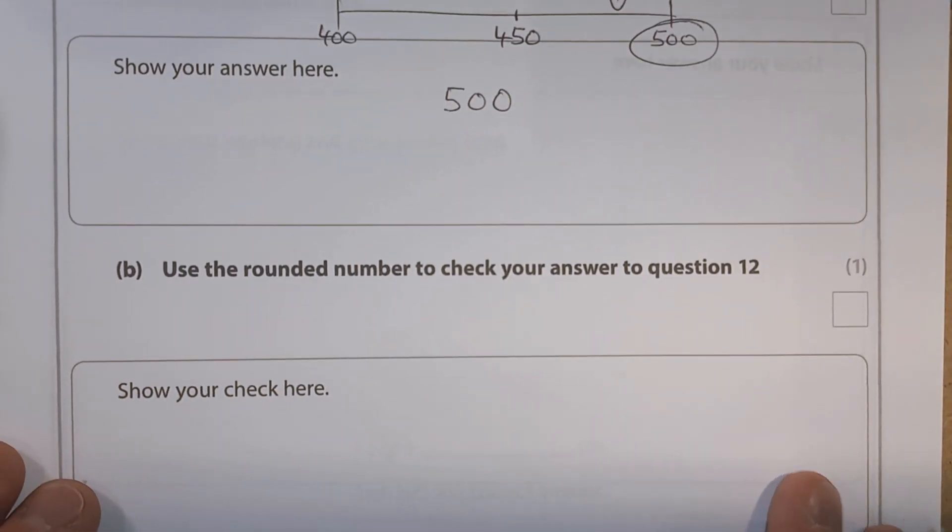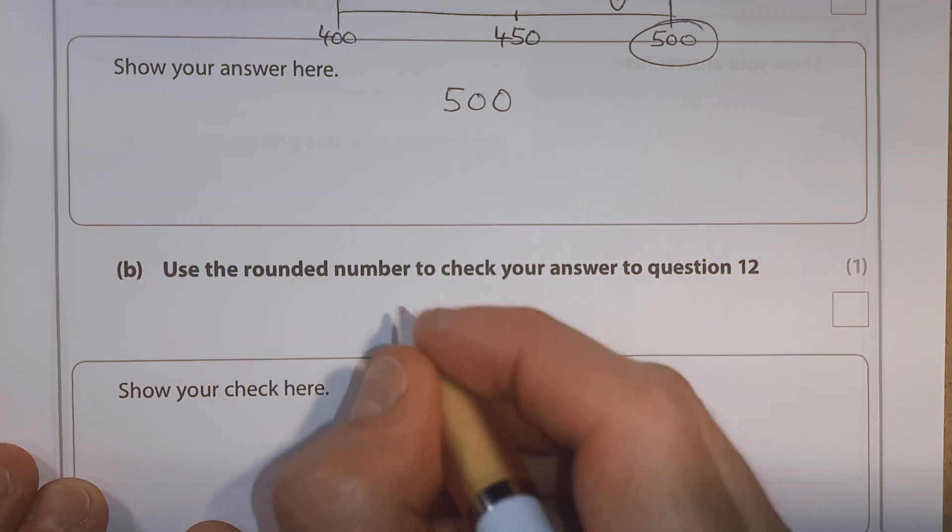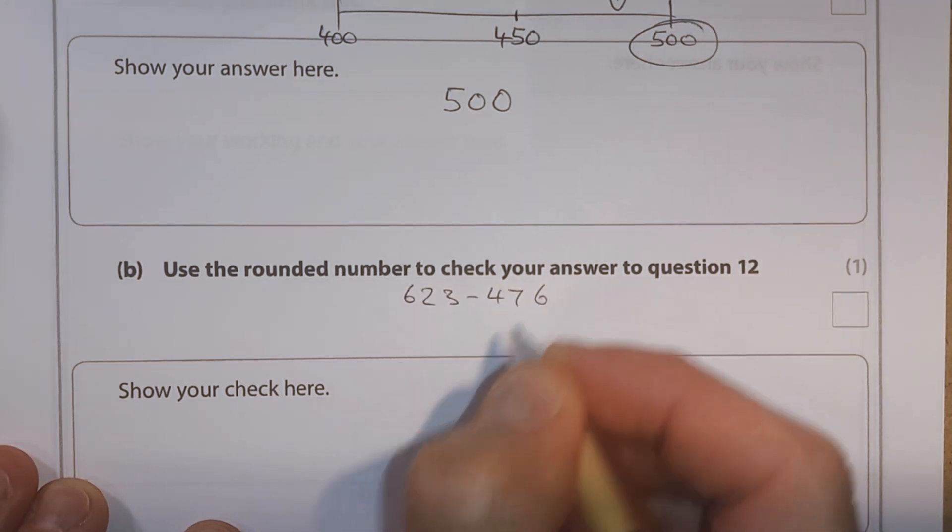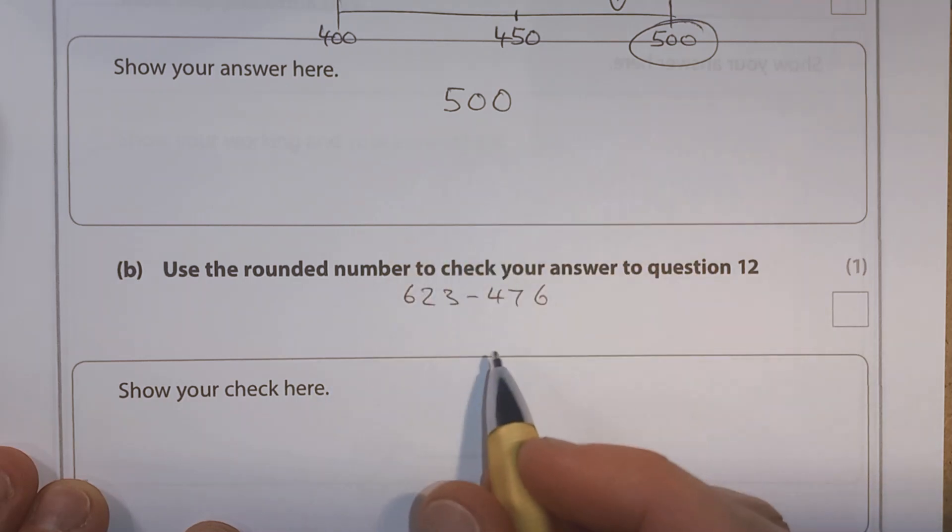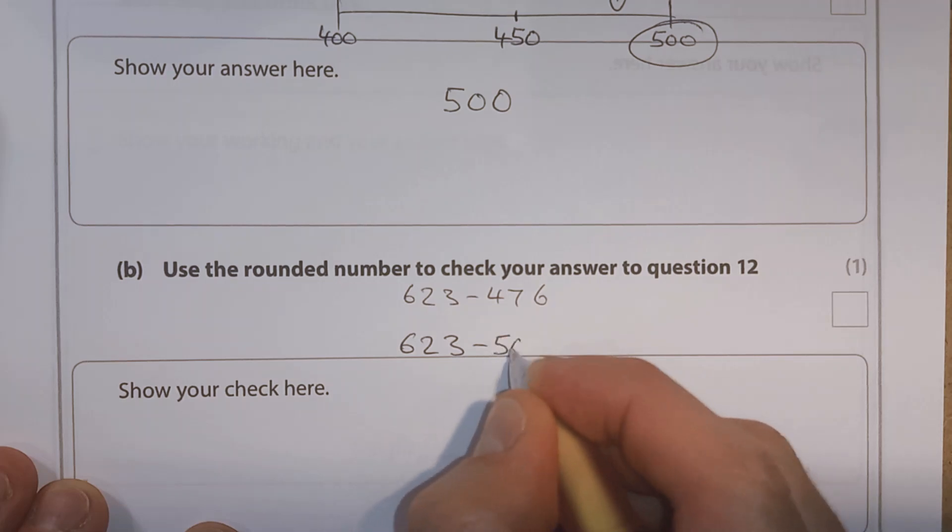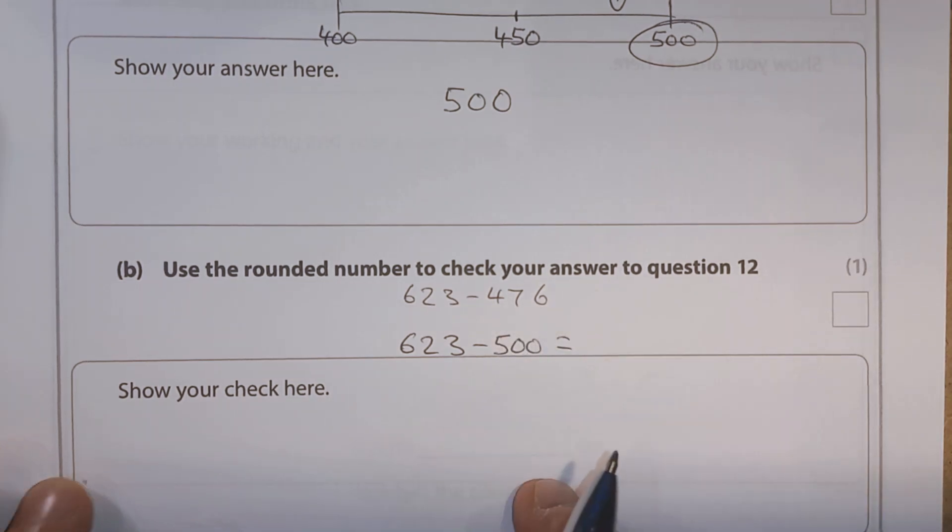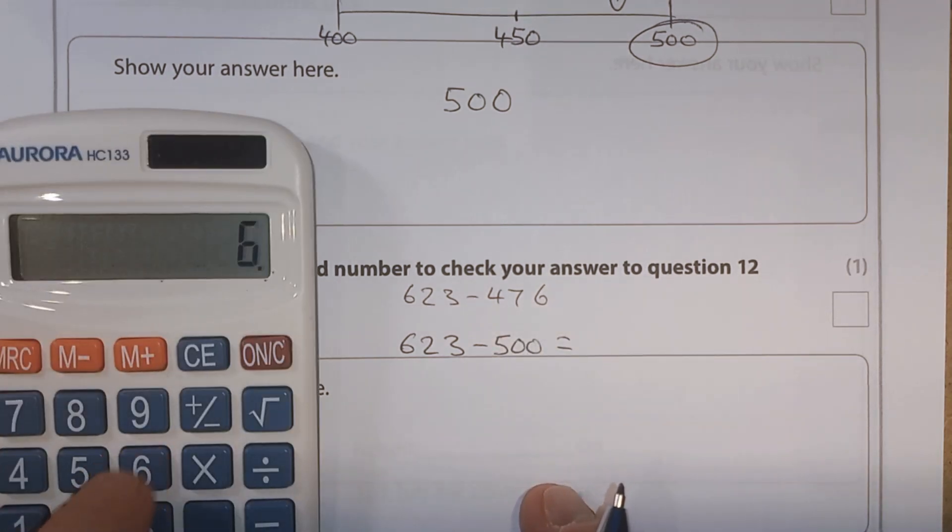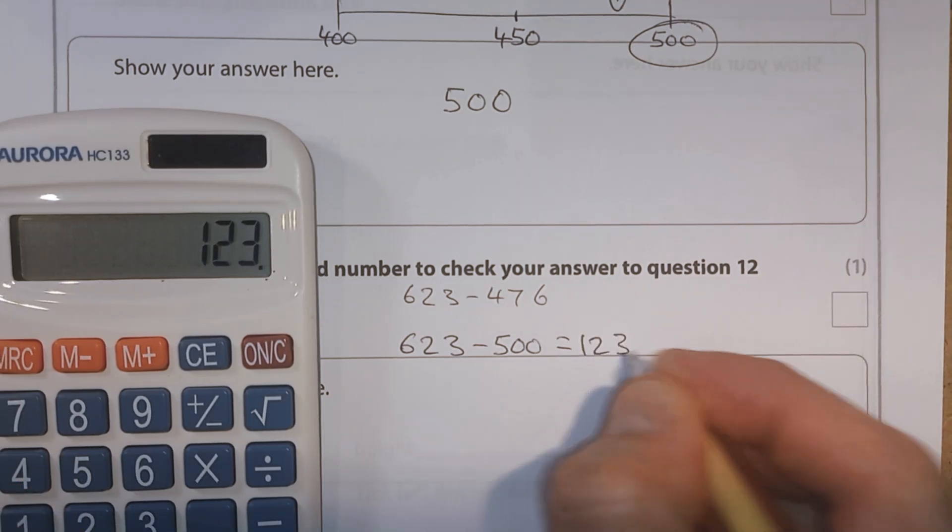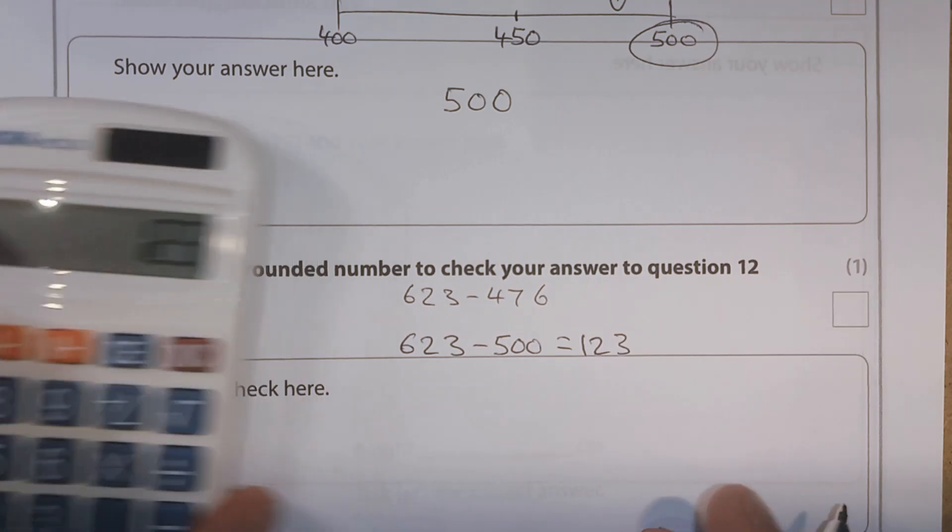Then they ask us to use the rounded number to check your answer to question 12. Okay, well, question 12 was 623 minus 476. If we're using 500 instead of 476, we've now got 623 minus 500. 623 minus 500. Then we get 123. That's our check.